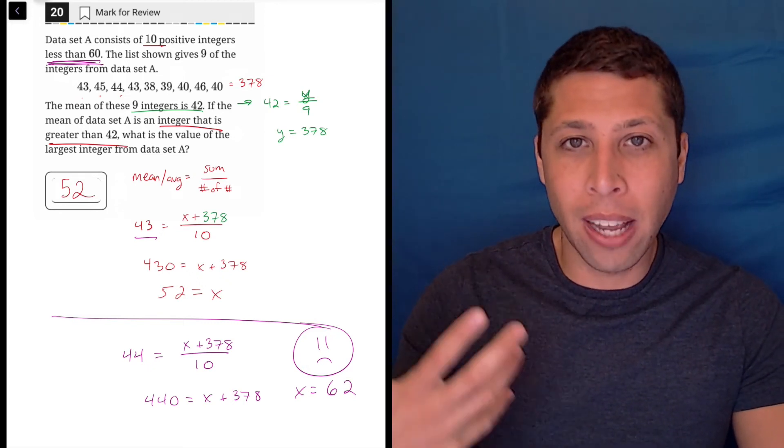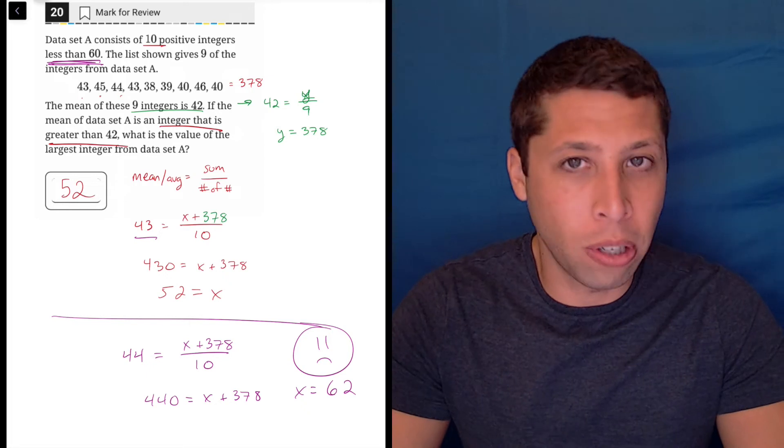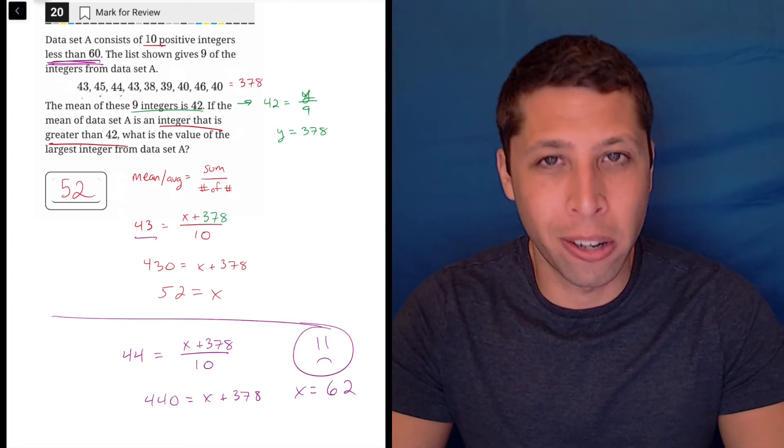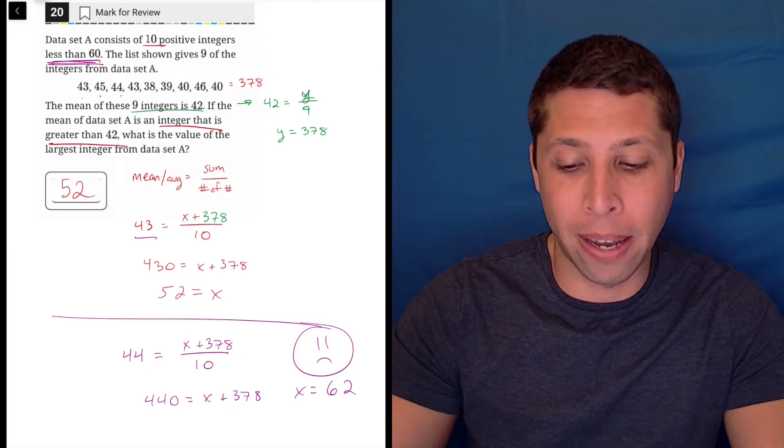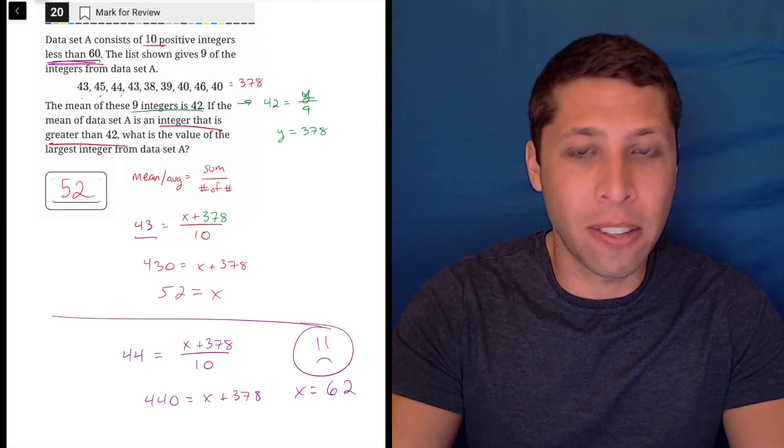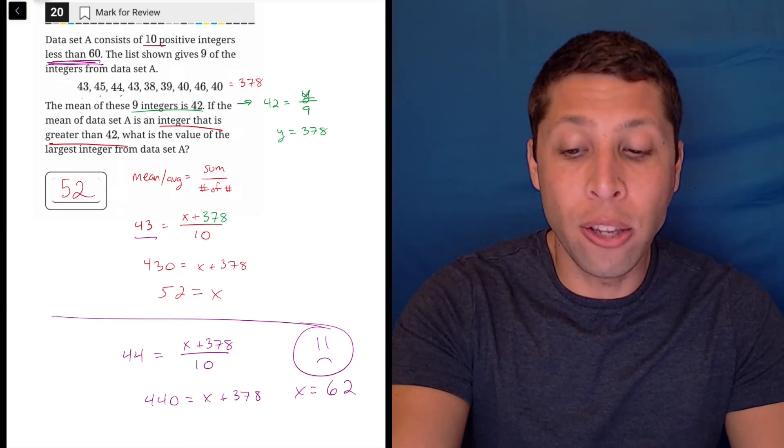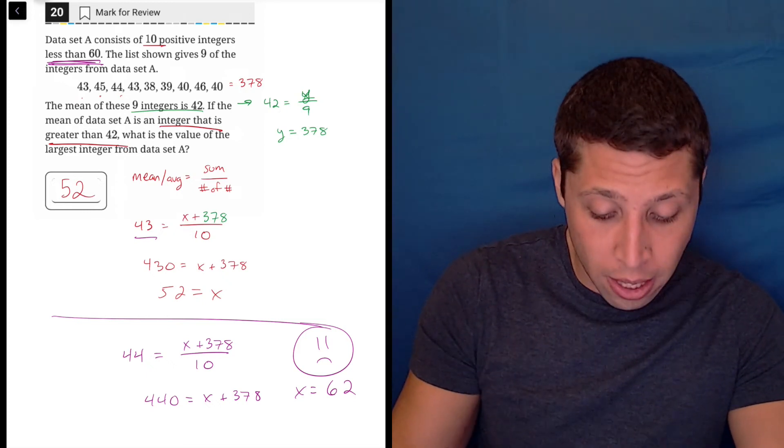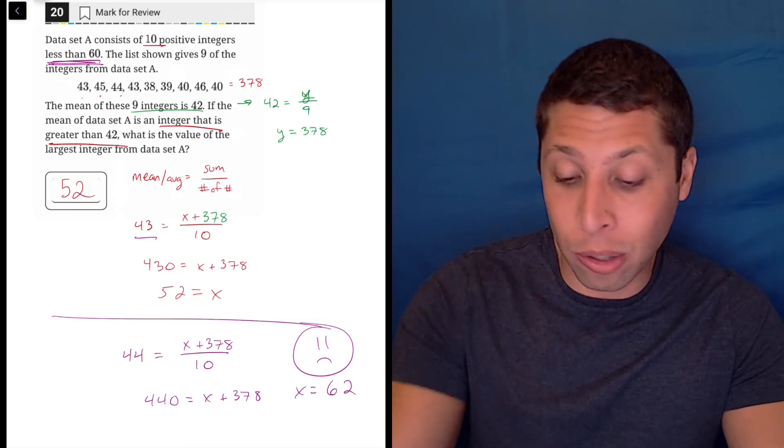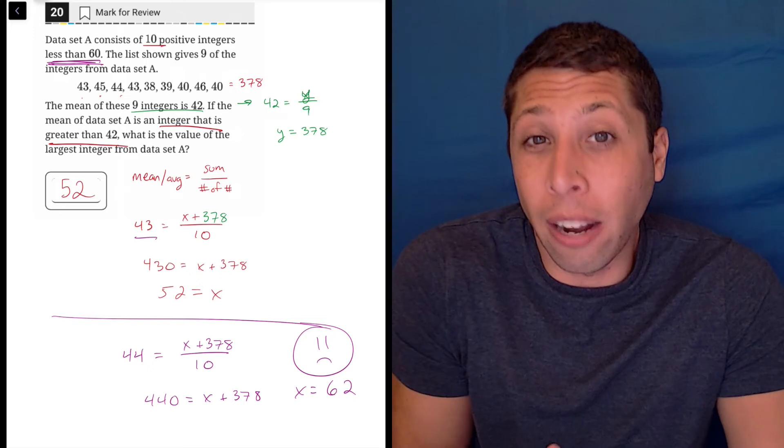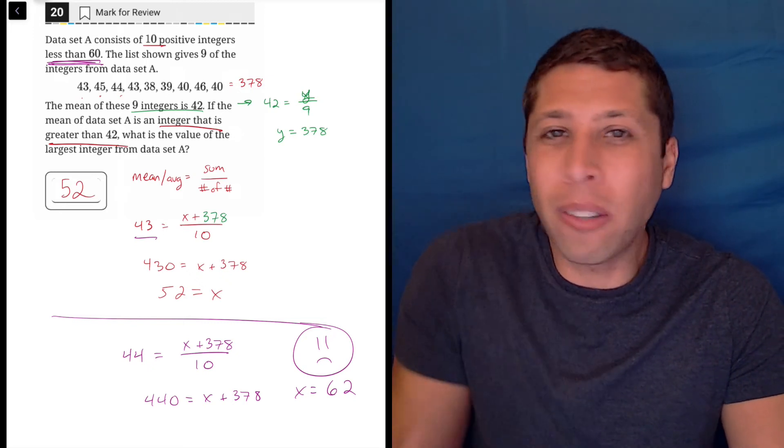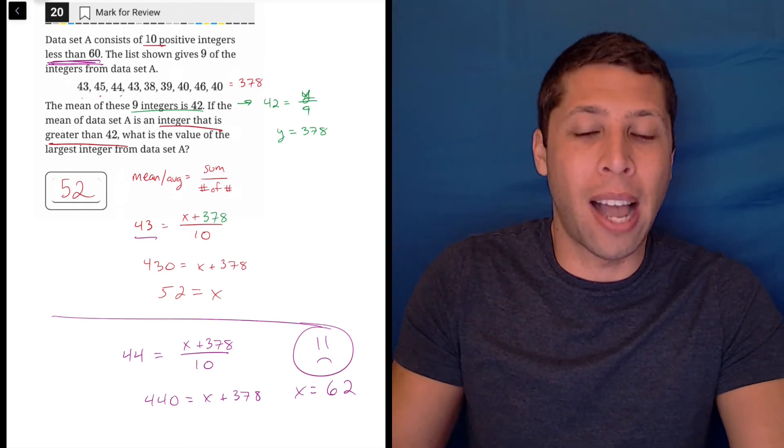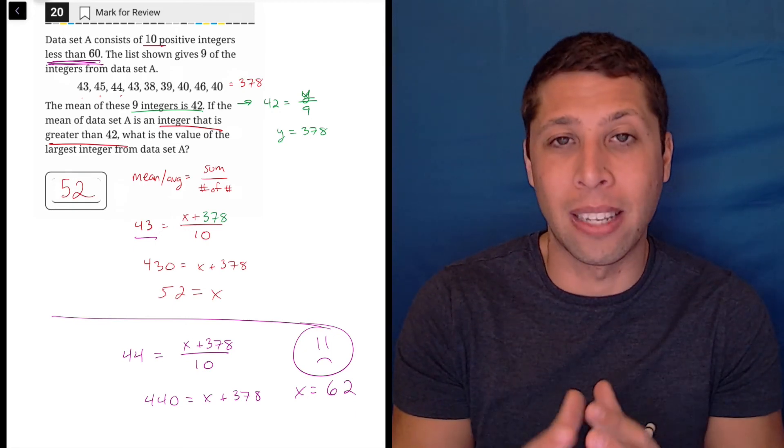So this is why a lot of times the simplest thing that you can assume is usually the best. Don't make your life harder. Don't imagine all the other weird possibilities that could happen. The safest move is probably the easiest move and you can prove it. We still proved that 52 is in that set. We were still able to do some math. It wasn't just like a gut feeling, but I wasn't bothered by all the conditions.